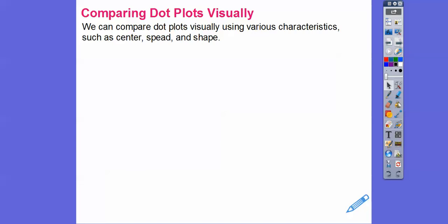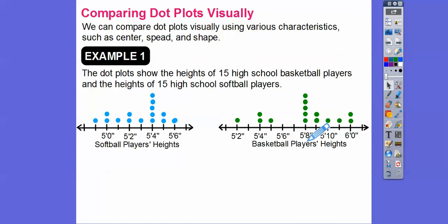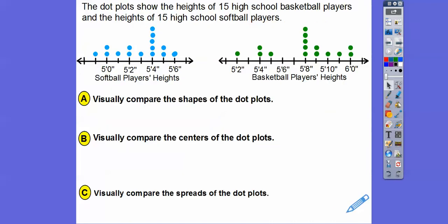We can compare dot plots visually using the center (median), the spread (big number minus small number), and the shape. Here are two dot plots showing the heights of 15 high school basketball players and 15 high school softball players. With 15 data points, the middle number is the 8th. The median for softball is at 5'4", and the median for basketball is at 5'8". Typically basketball players are the tall kids, and softball players are more average height.